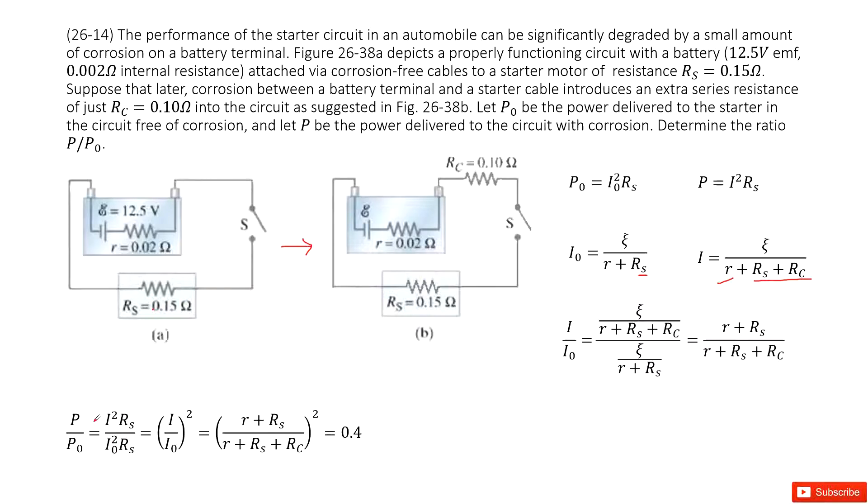Now we can list the ratio of the final power with the initial power. The final power is I squared times RS. Initial power is I naught squared times RS. RS cancels.